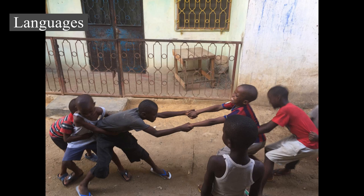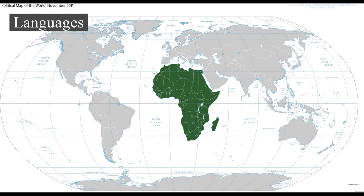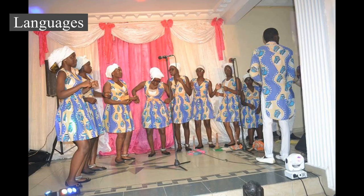The Niger-Congo language family covers much of sub-Saharan Africa. In terms of number of languages, it is the largest language family in Africa and perhaps one of the largest in the world. The Khoisan languages number about 50 and are spoken in southern Africa by approximately 400,000 people. Many of the Khoisan languages are endangered. The Khoi and San peoples are considered the original inhabitants of this part of Africa.